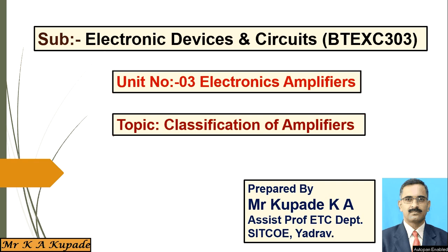In unit number one, we specifically discussed the JFET — its introduction, construction, characteristics, and configuration. In unit number two, we covered the MOSFET and its DC analysis: what MOSFET is, its operation, construction, what is meant by E-MOSFET (enhancement MOSFET), its characteristics, parameters, common configurations, analysis of those configurations, load line, and modes of operation.